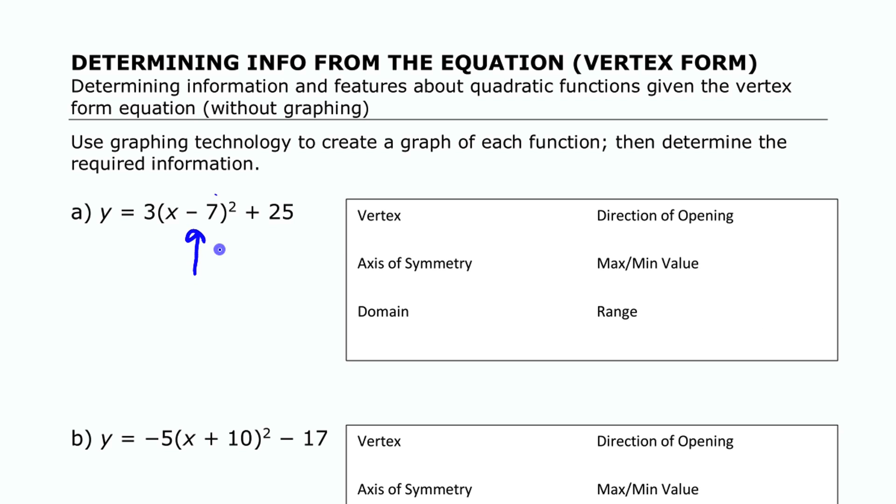So we're first going to look at these two values right here. We have that h is 7 and we have that k is 25, right there and there.